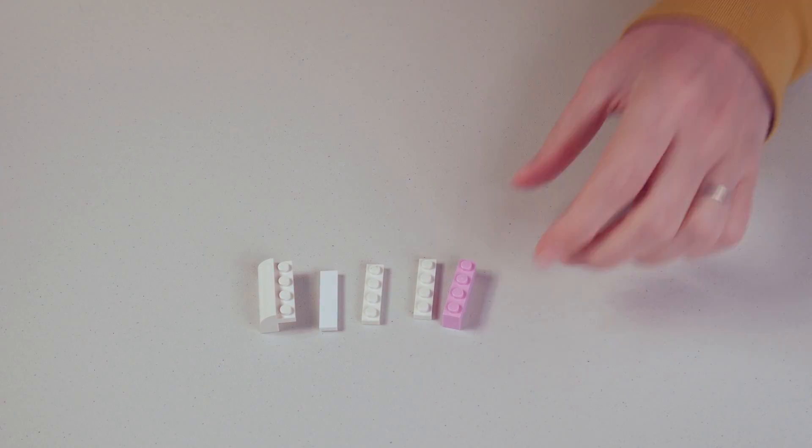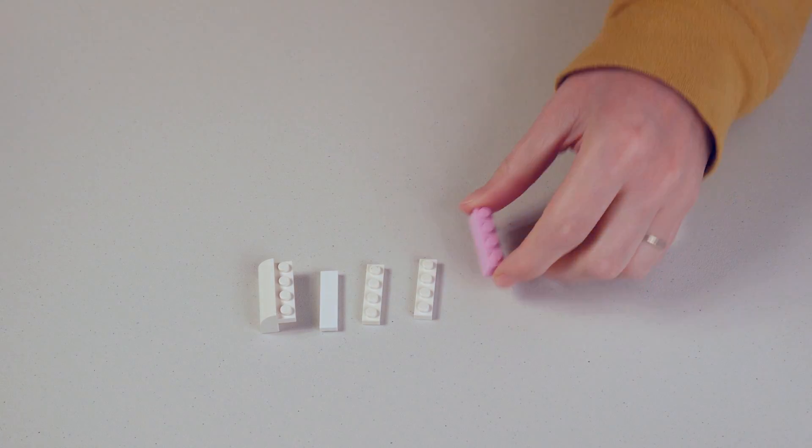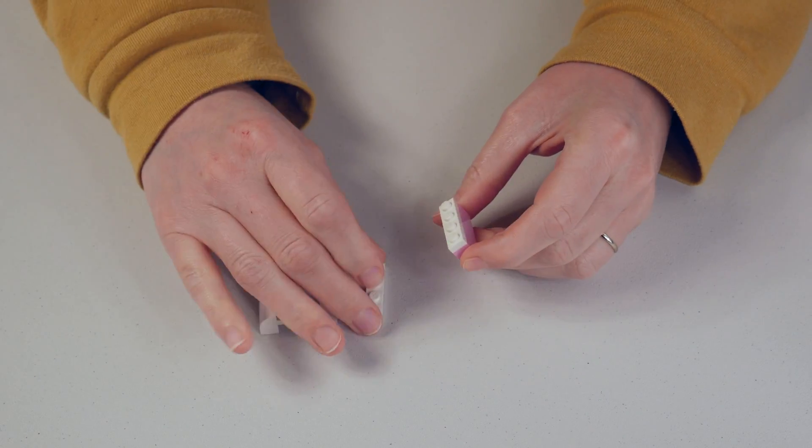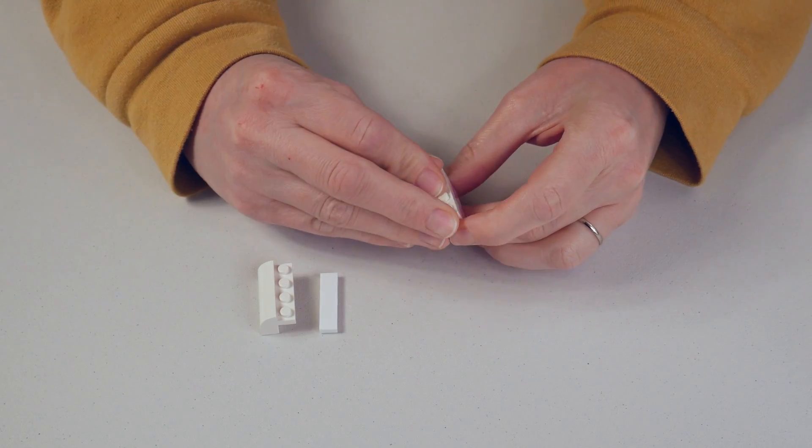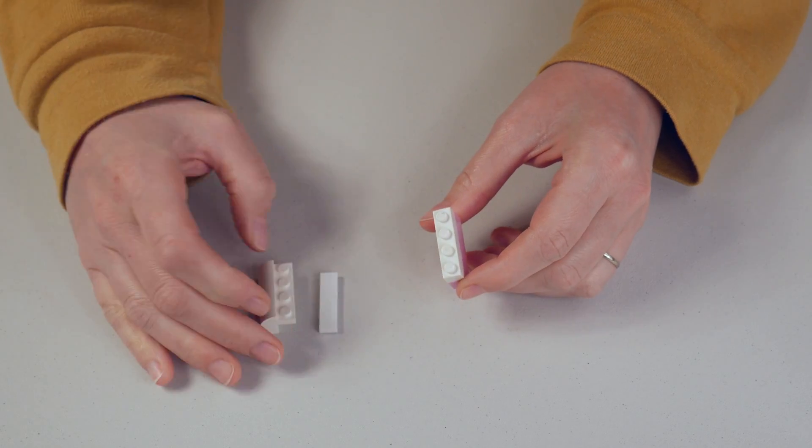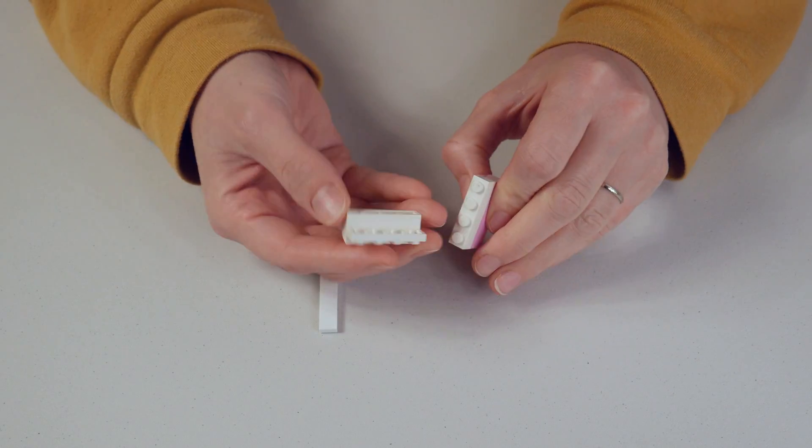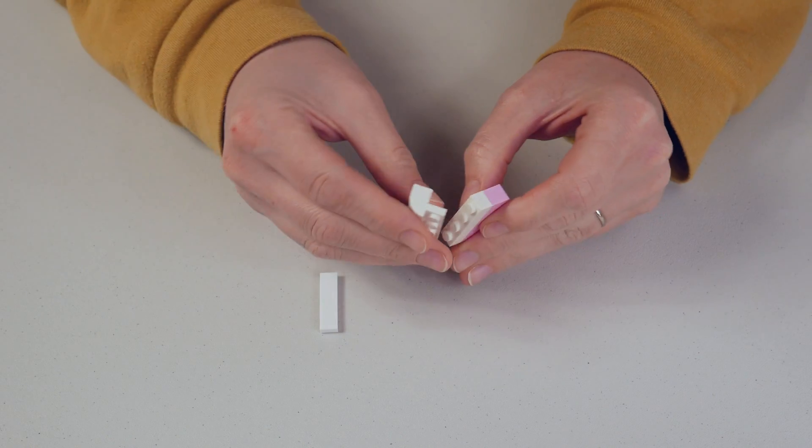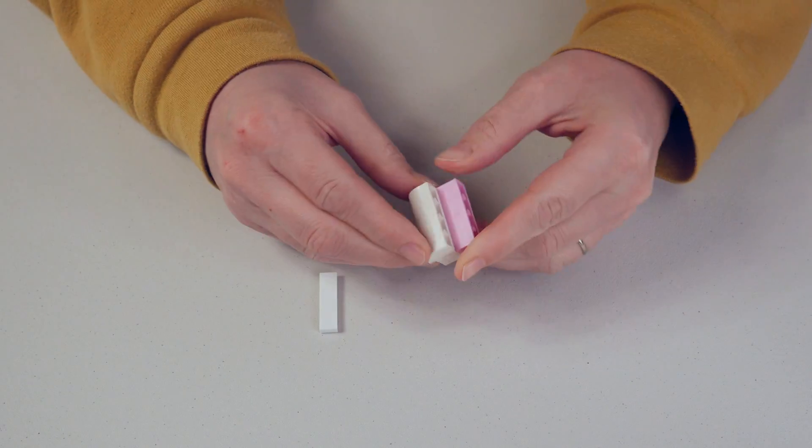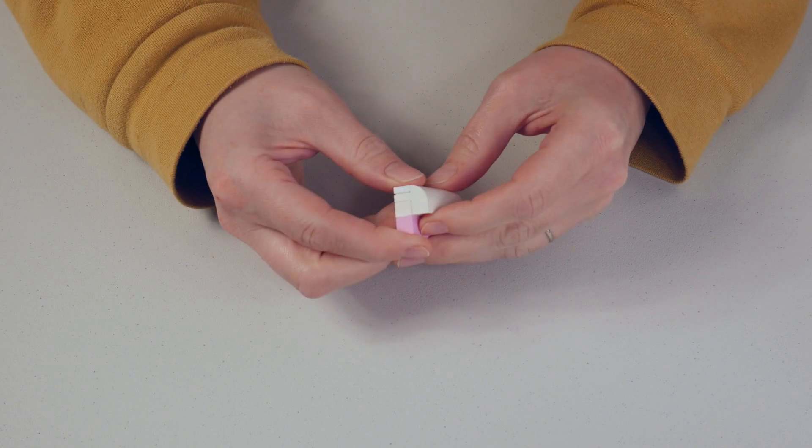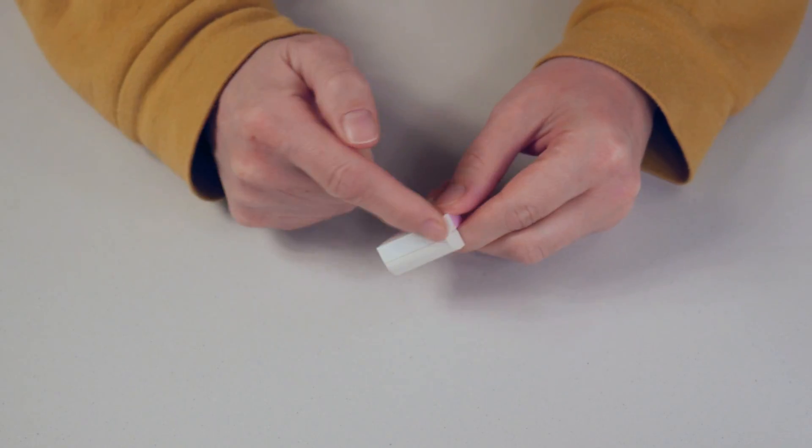To make the pillow you take a regular size one by four pink and stack two slim one by fours on top, and then you take this two by four slope and place it on top like so, and then a flat tile one by four right here.